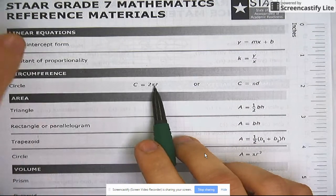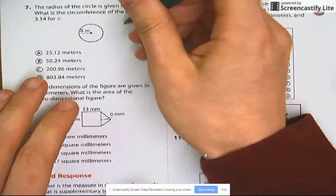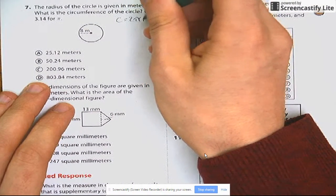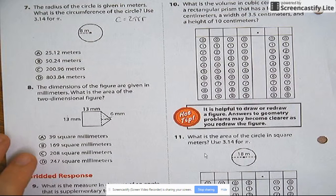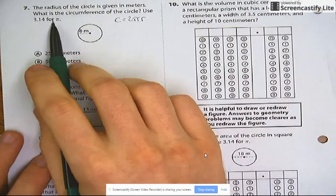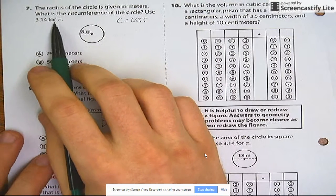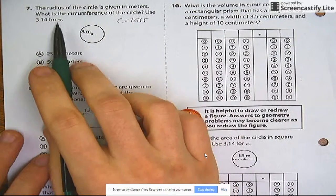So I'm going to write this format over here again. Copy it down. C equals 2 pi r. And remember, it says use 3.14 for pi. But if we're dealing with a multiple choice test, just use 3 for pi.